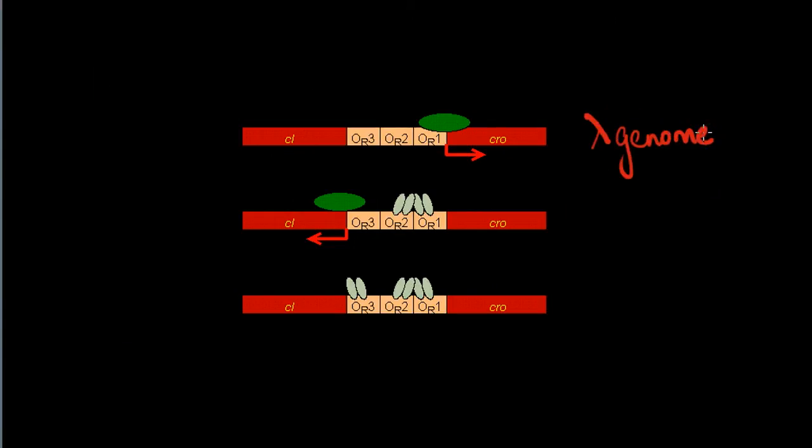The regulation of the expression of CI and CRO proteins is done by the CI repressor protein. The CI repressor protein exists as dimers and binds to any of the three operators on the lambda genome: OR1, OR2, or OR3.